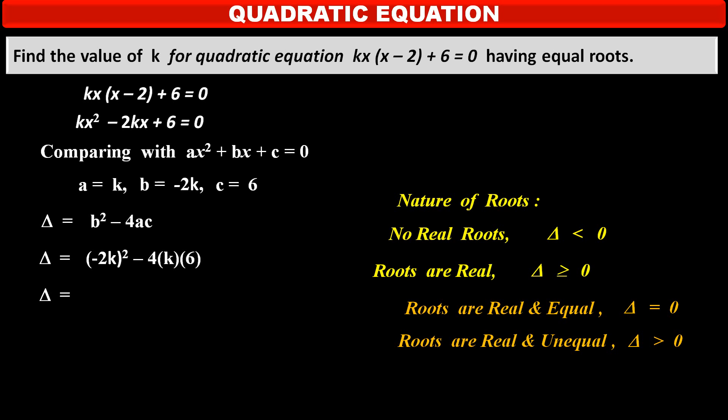So, solving the above, we get delta is equal to (-2k)², that is, 4k² minus 4, 6, 24k.